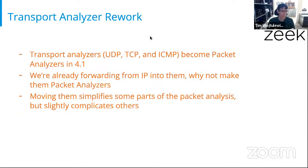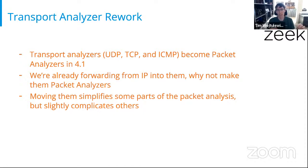Moving on from just the Ethernet layer, we also realized during the 4.1 work that looping in and out of the session analysis framework to deal with transport analysis — namely UDP, TCP, and ICMP — didn't make a lot of sense. So we moved from that: those three analyzers became packet analyzers. We're already forwarding from IP into them, so why go into them and then back out into the packet analysis framework? Moving this stuff lays groundwork for being able to add tunnel analyzers.